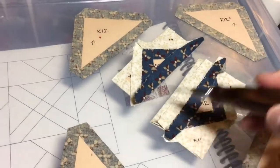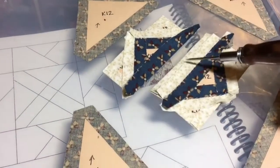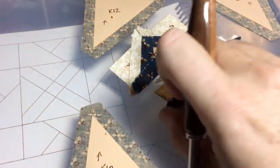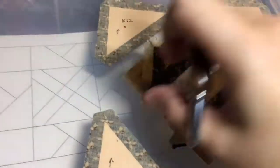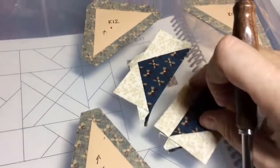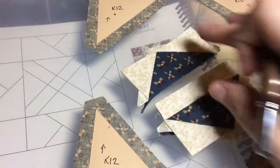So I've assembled my top flying geese unit, and I have attached the rectangle to the other flying geese unit. So now I am going to connect these to make my central square.